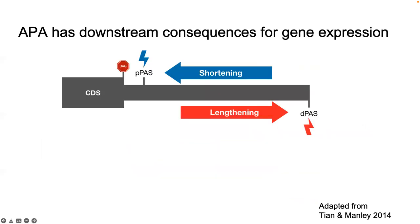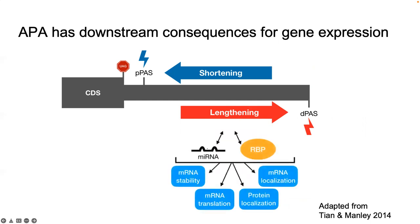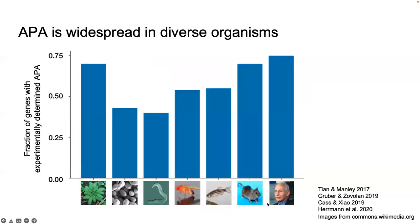Importantly, APA — alternative polyadenylation — has downstream consequences for gene expression. If you shorten or lengthen the 3' UTR, you're adding or removing binding sites from micro-RNAs or RNA binding proteins that go on to influence downstream processing of that transcript. Alternative polyadenylation is widespread in diverse organisms; in humans, targeted 3' sequencing data has shown that a majority of human transcripts undergo this alternative process.